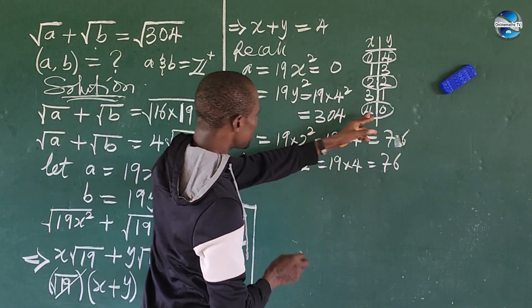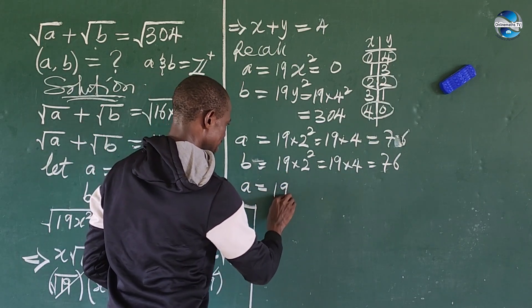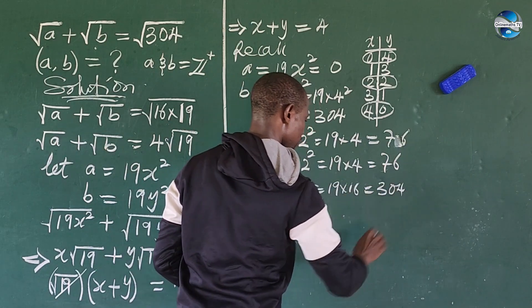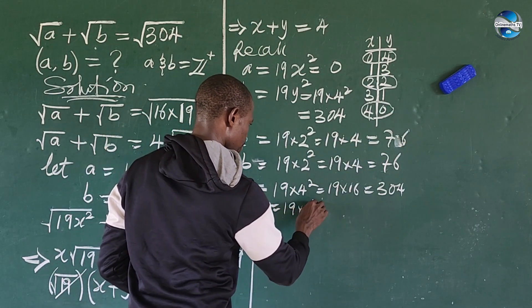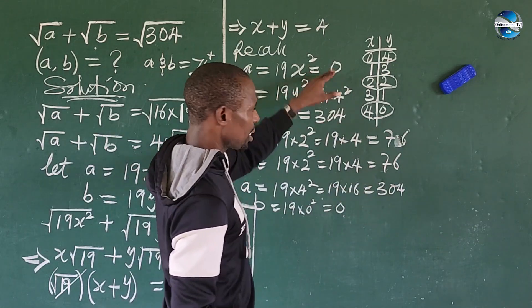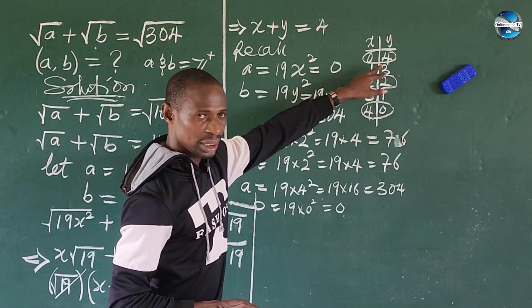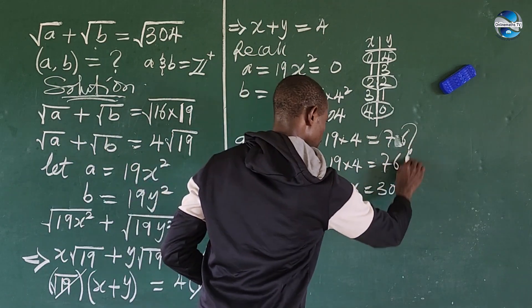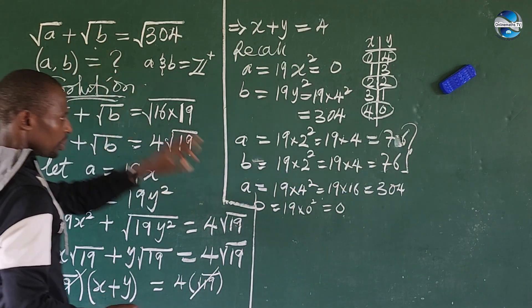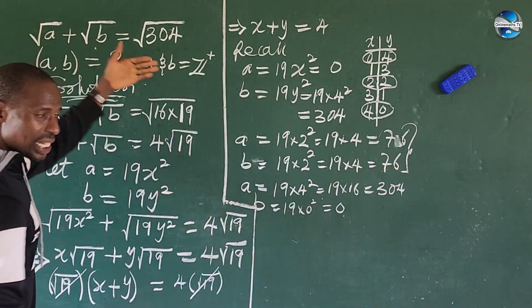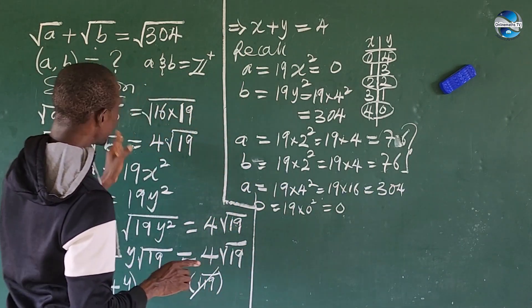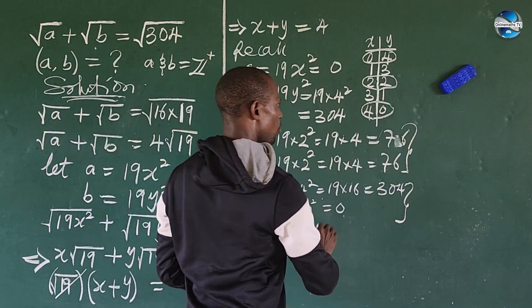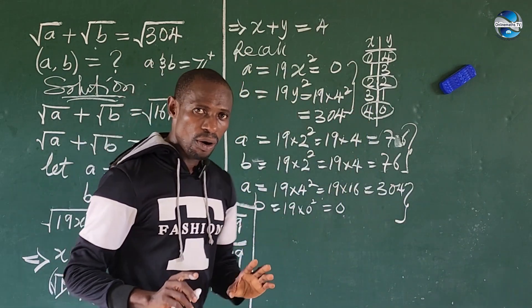For x = 4, y = 0: a = 19·4² = 19·16 = 304 and b = 19·0² = 0. These values also satisfy the equation. Note that pairs like (1,3) and (3,1) would not satisfy the equation. To confirm, substituting (76, 76) gives 2·√76 = 4·√19, which equals √304. All three valid pairs check out.